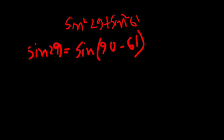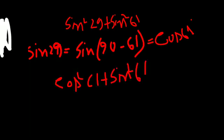sin²29° + cos²61°. Using the identity sin(90° − θ) = cos θ, we note that sin 29° = cos 61°. So sin²29° + cos²61° = cos²61° + cos²61°... actually using sin²θ + cos²θ = 1, the answer equals 1.